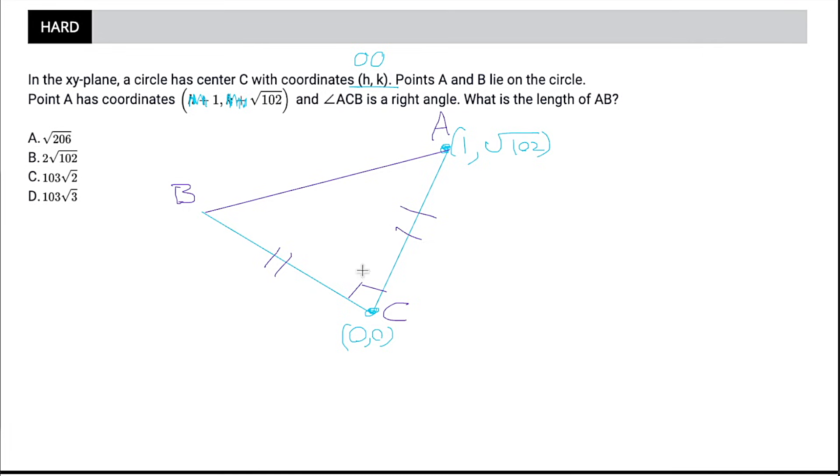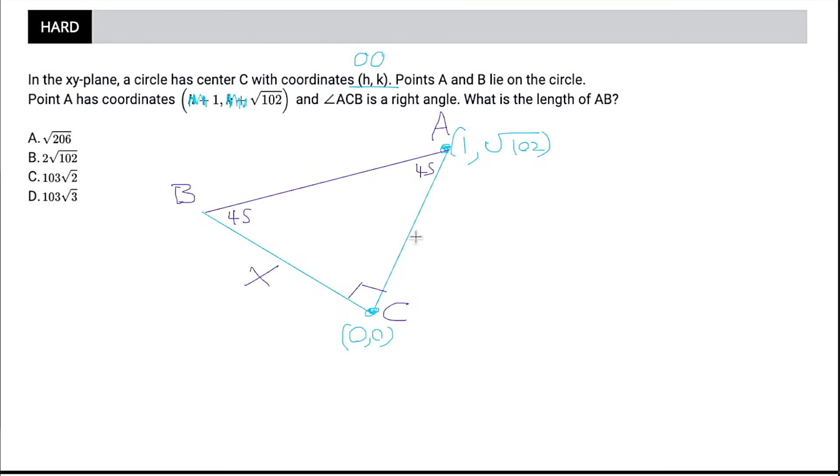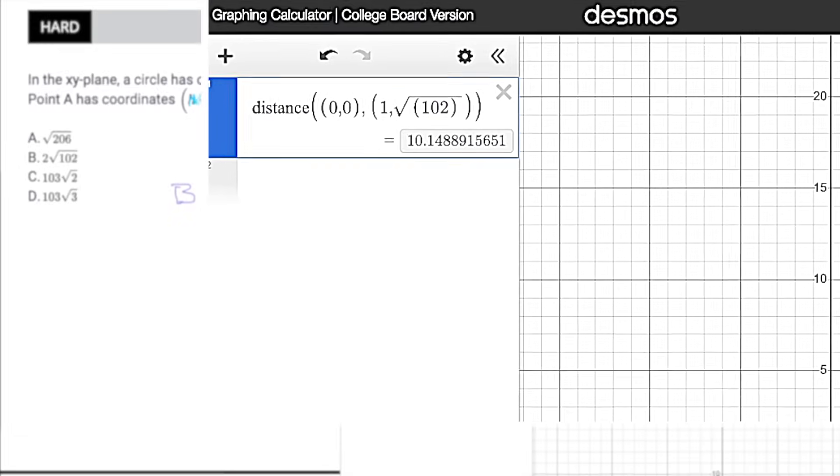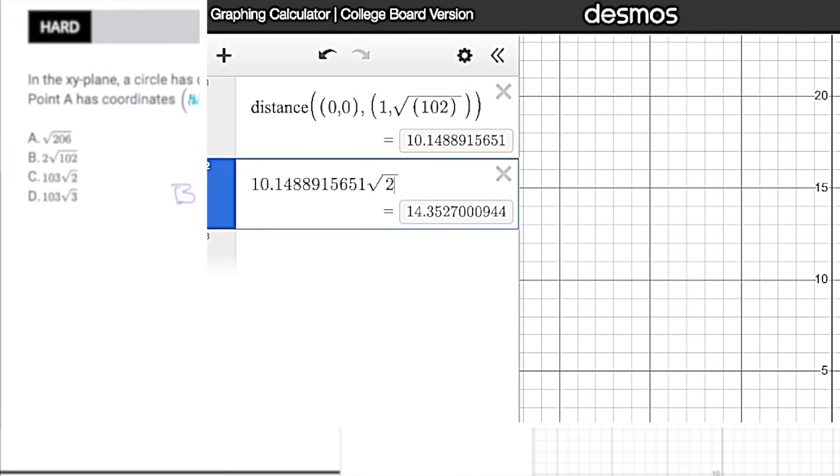And if we have a 90 degree angle and these are congruent, then both of these have to be 45 degrees. So we have a 45, 45, 90 triangle. And you should have this memorized. But in case you don't, just pull up the reference. And we know that this is going to be X, this is going to be X, and this is going to be X times the square root of 2. So if we can just figure out the length of one of these sides, we can plug it in and get our answer. And one way to do this would be to simply use Desmos. Basically, the distance between 0, 0 and 1, square root of 102 is going to be the length of X. So if we plug that into Desmos, it will give us the actual value. And we can take this number and then multiply it by the square root of 2 to get our answer 14.3 something something.